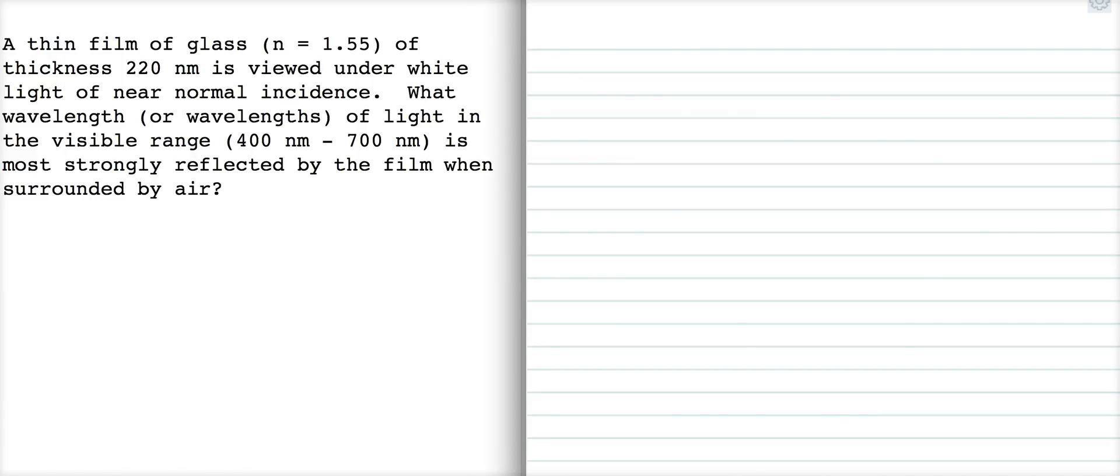We've got light reflecting off of the thin film, so the basic diagram looks like this, where we've got ray A and ray B coming out, and the thin film has an index of 1.55, and it's surrounded by air on both sides, so n equals 1, n equals 1.